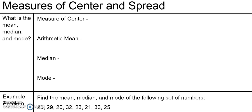All the examples in this video will center around what's called one-variable quantitative statistics. That means all the topics in this video will have to do with things like how long it takes you to get to school in the morning, how tall you are, things like that — not things with categories like your favorite color.